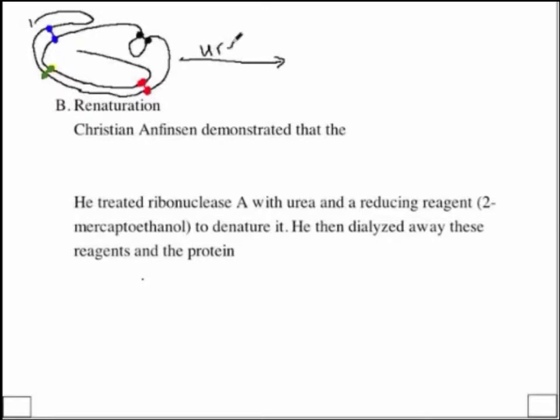So urea would lead to denaturation, and then also in the same solution, he added beta-mercaptoethanol or 2-mercaptoethanol. And of course, as we talked before, this allowed him to reduce the disulfide bonds.